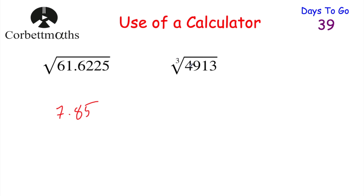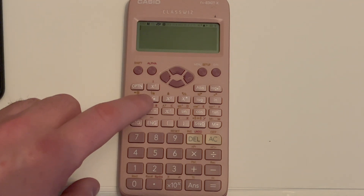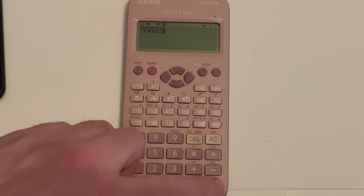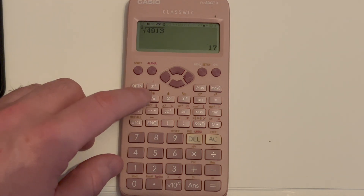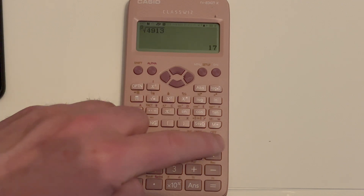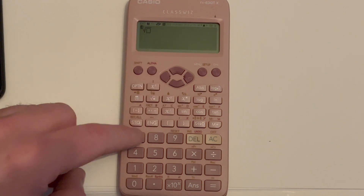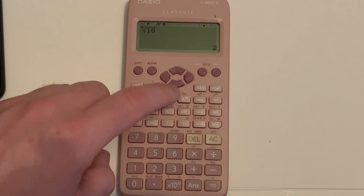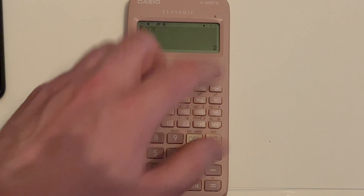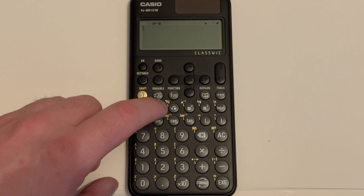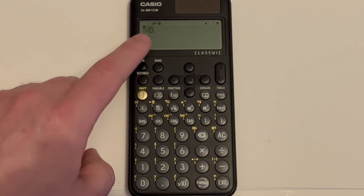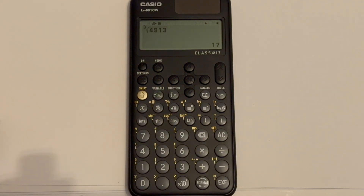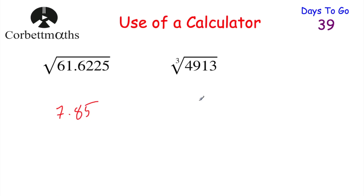Next, work out the cube root of 4913. On the first calculator, there's a cube root button just above the square root — press shift and square root to get it. Type in 4913 and press equals: the answer is 17. For any other roots, press shift and the power button, then type the root number (e.g., 4 for a fourth root). On the other calculator, press shift and the square root button to access other roots, type 3 for cube root, move the cursor right, type 4913, and press equals to get 17.